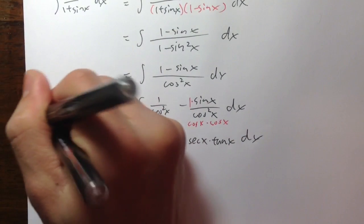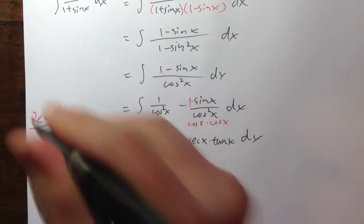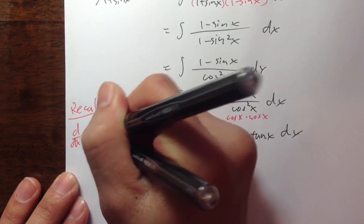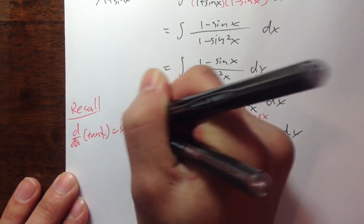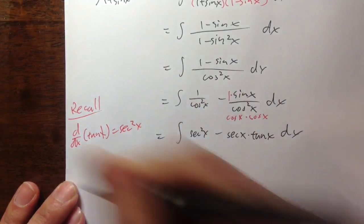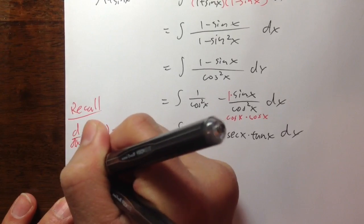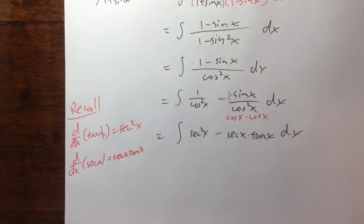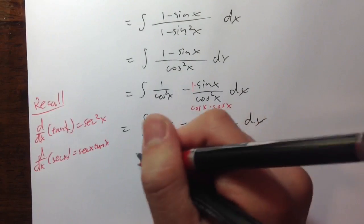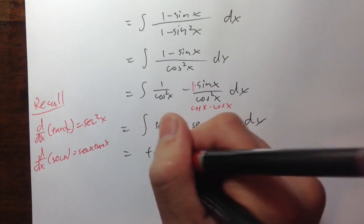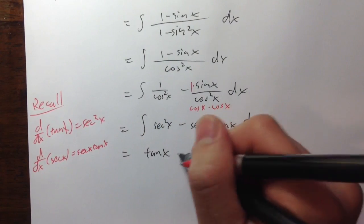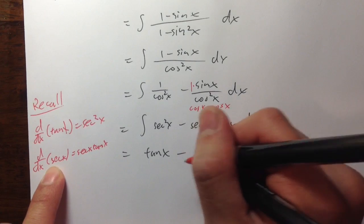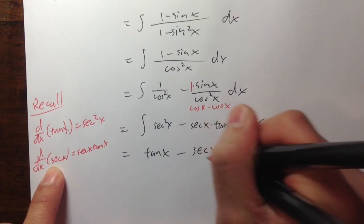Let me take some notes — recall: the derivative of tangent x is secant squared x, and the derivative of secant x is secant x tangent x. So the antiderivative of secant squared x is tangent x, and the antiderivative of secant x tangent x is just secant x. So our answer is tangent x minus secant x plus C.